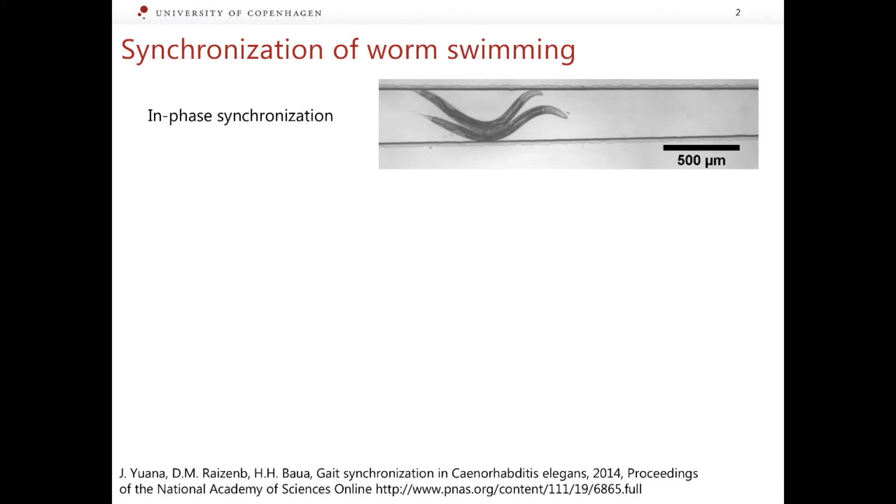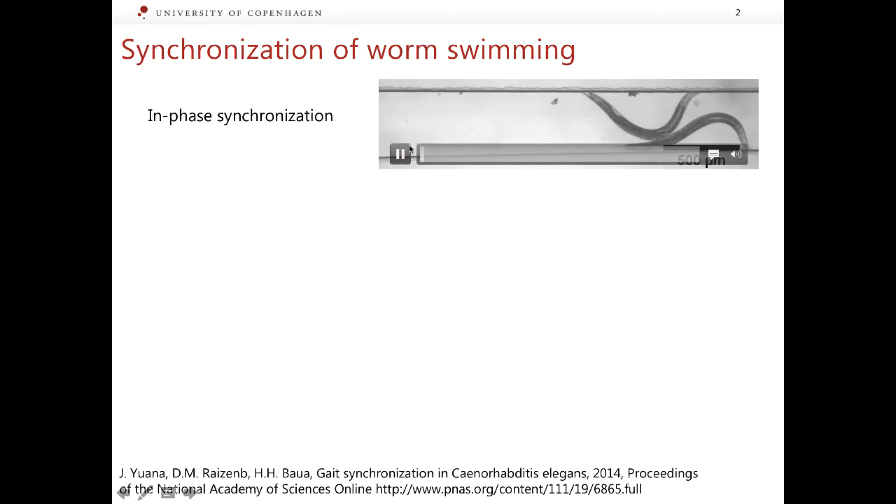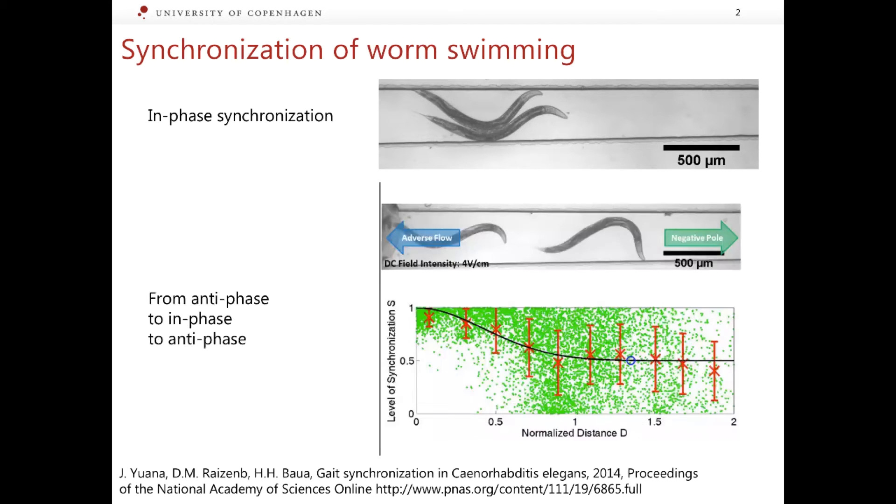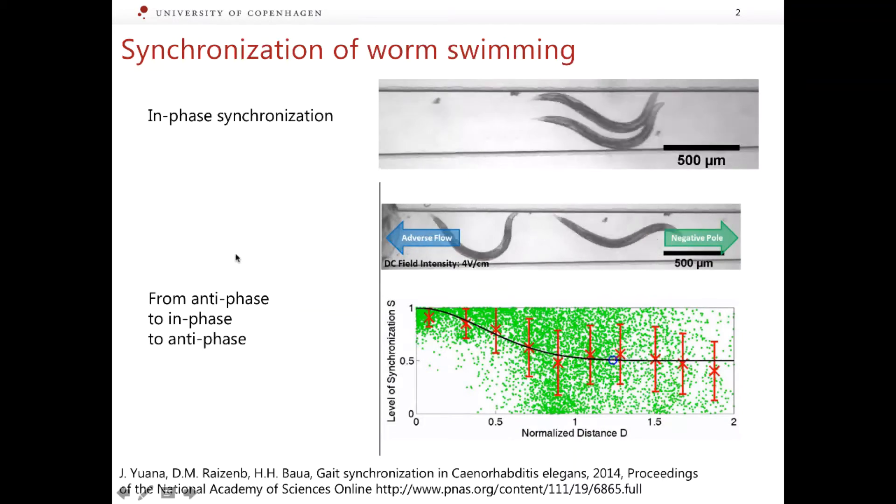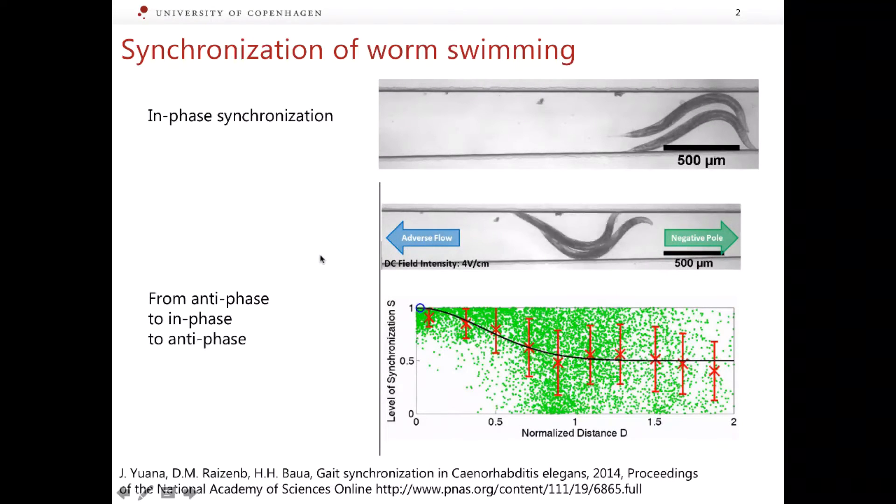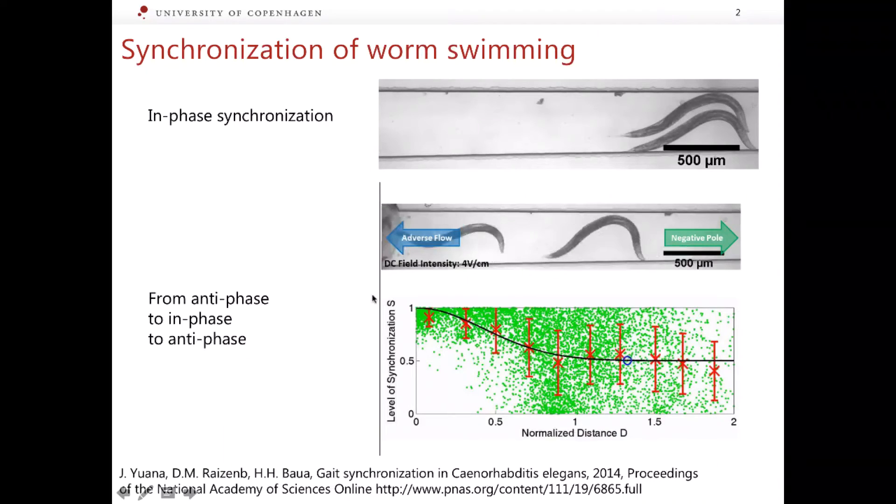It appears that if these worms are very close to each other, they swim by aligning their bodies perfectly, as shown in this video. This corresponds to the so-called in-phase synchronization. However, if they are allowed to swim far away from each other, their frequencies can still be the same, but their bodies can be anti-phase. The video here shows how the style of synchronization changes depending on the distance between the worms.